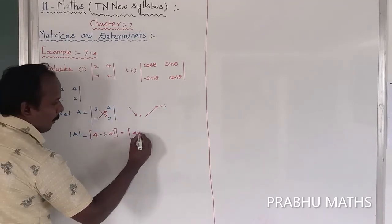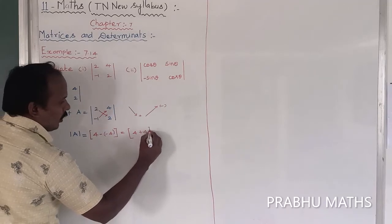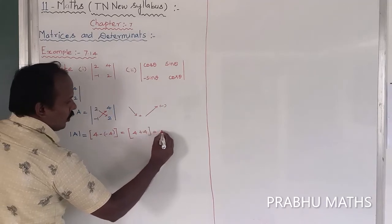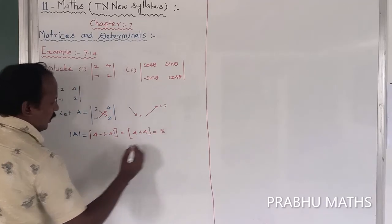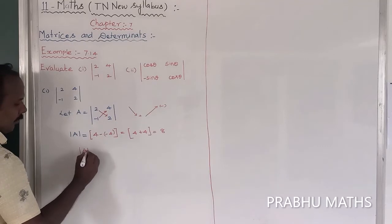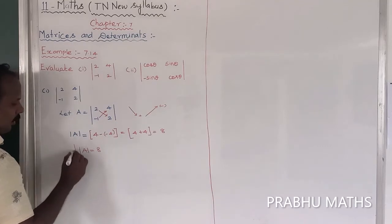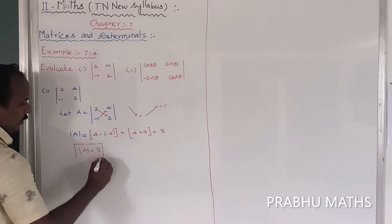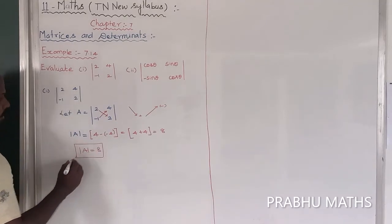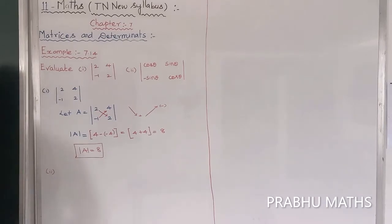So 4 plus 4 equals 8. The modulus of A, that is the determinant, is equal to 8. So the first subdivision is completed. Next we are going to the second subdivision.